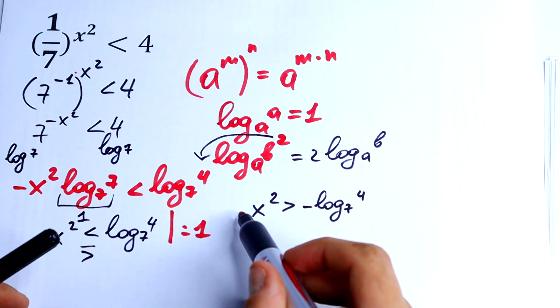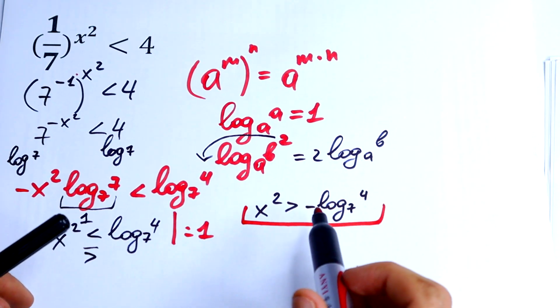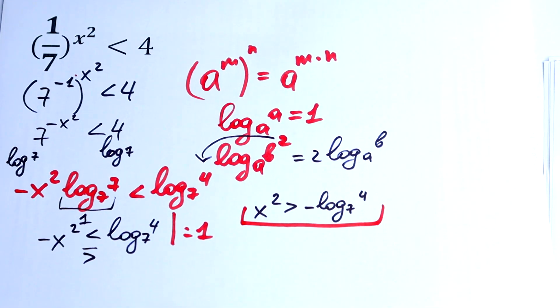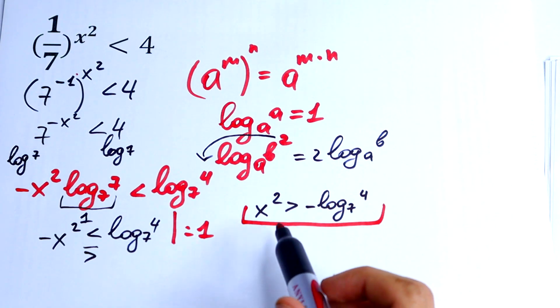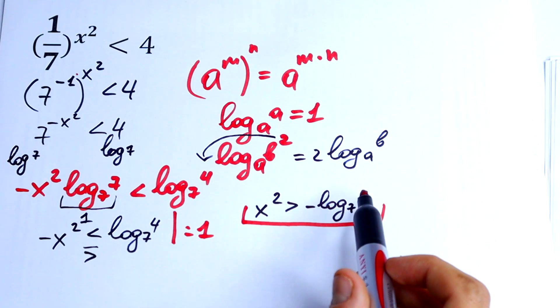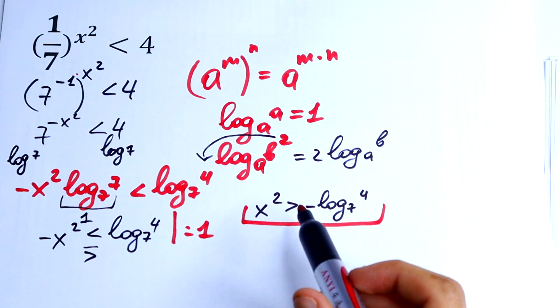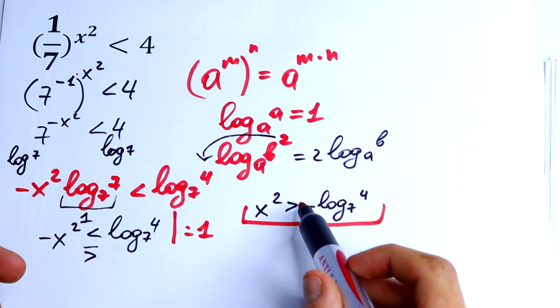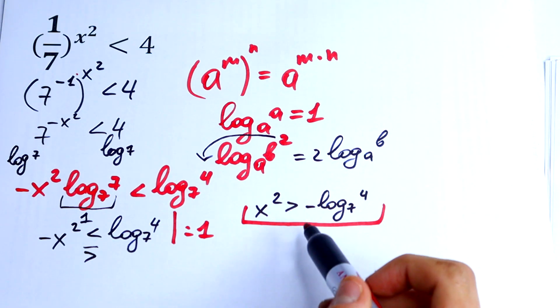So this is our final inequality. But what about a solution? We have x squared is greater than minus log base 7 of 4. So we have x squared is greater than a minus value.